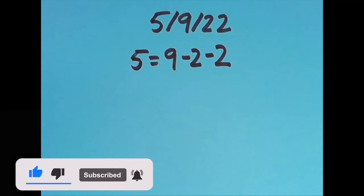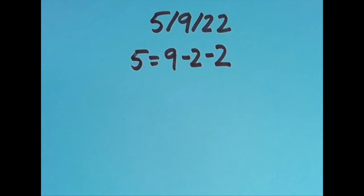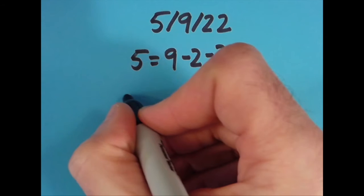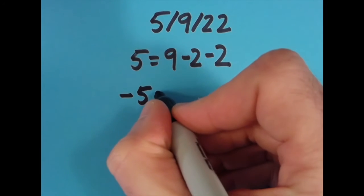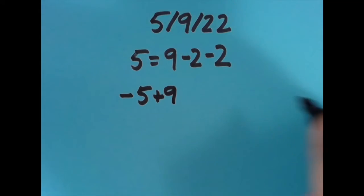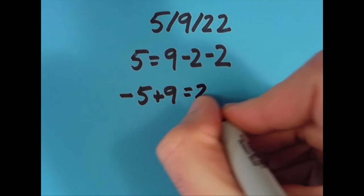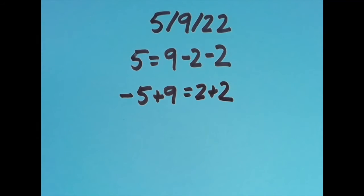Then I tried it again. I thought there's got to be other ways to do it, so I moved the equal sign over to a different position. So if I move it one spot to the right, I have negative 5 plus 9, which is 4, equals 2 plus 2, which is also 4.